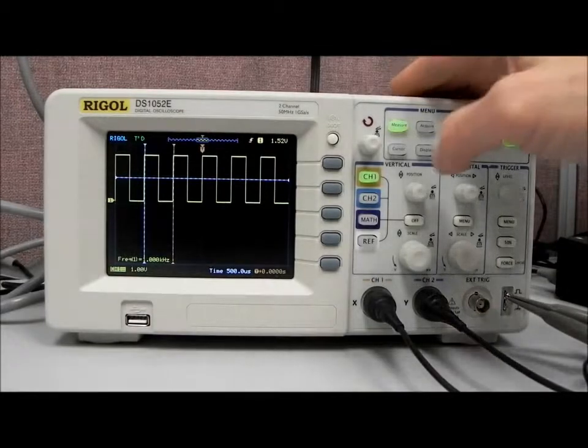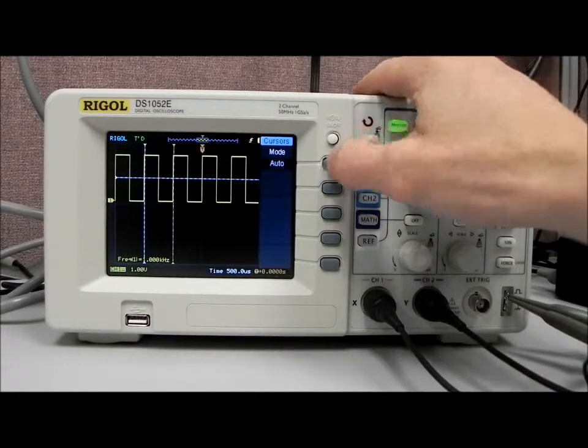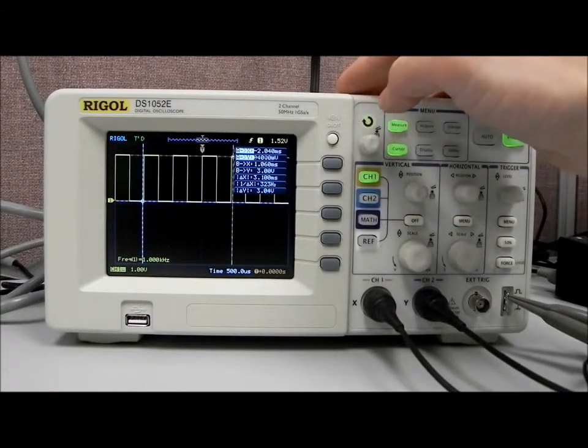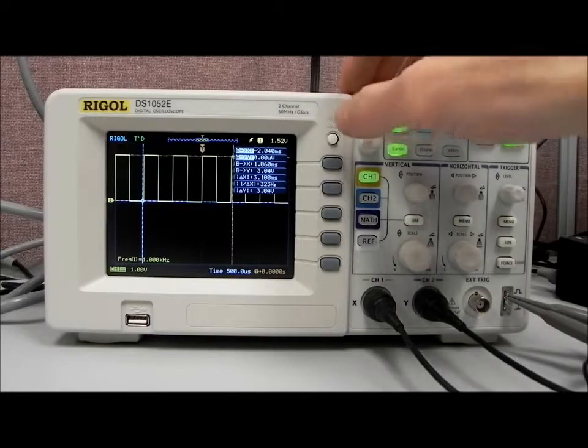Now let's take a look at some of the other cursor measurement modes. So let's go to cursor, and then out of auto, let's go to track. And what tracking is going to do, as you can see, it's actually moving along with the signal.